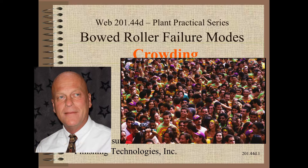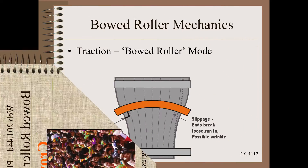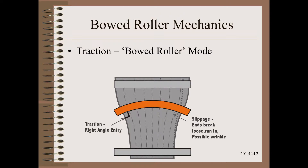Welcome to Web Handling. My name is Dave Roysum. In this clip we continue our series on bowed roller failure modes by looking at what happens when you crowd a bowed roller into a small space. Yet another surefire way to cripple or kill a bowed roller is to crowd it too close to the upstream or downstream rollers.